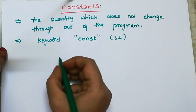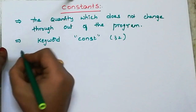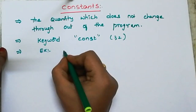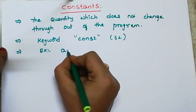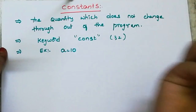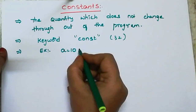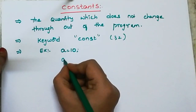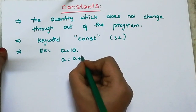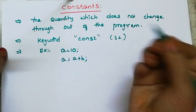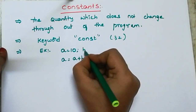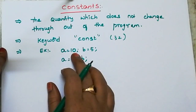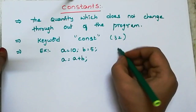For example, a equals 10. Next step, a equals a plus b. B equals 5. So a equals 10 is already assigned.